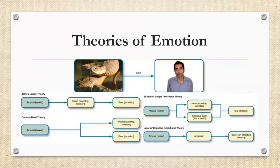Switching over to two-factor theory, we see the snake, our body responds and we think about it — we think, "I'm scared, heart's racing, all that's going on" — and we see the fear emotion. In cognitive mediational theory, however, we see the snake, we think about the situation, and then we have the physiological responses and our emotion.